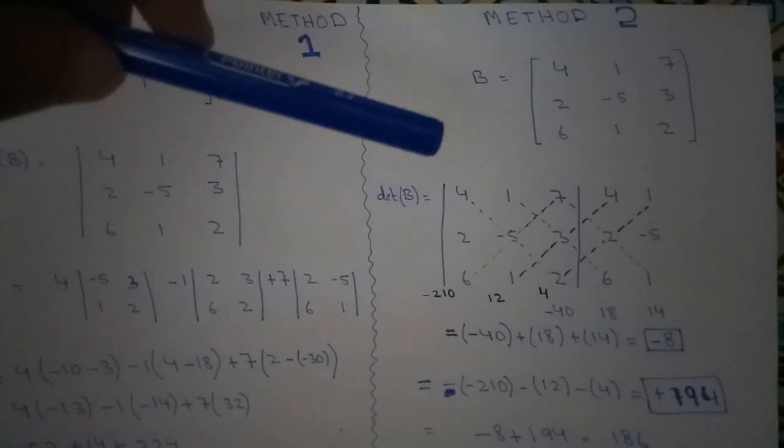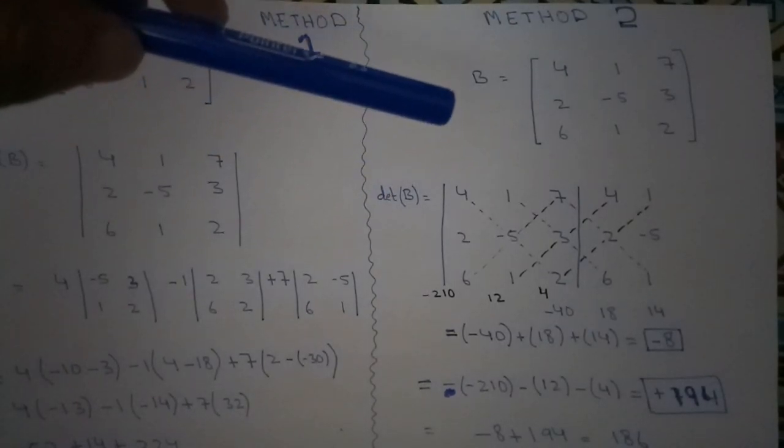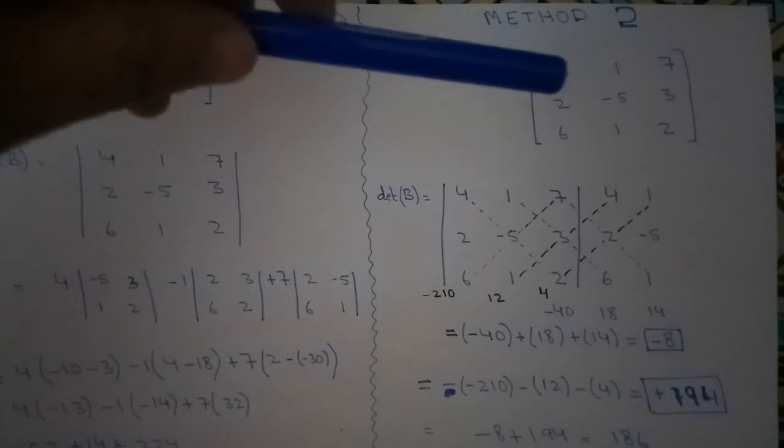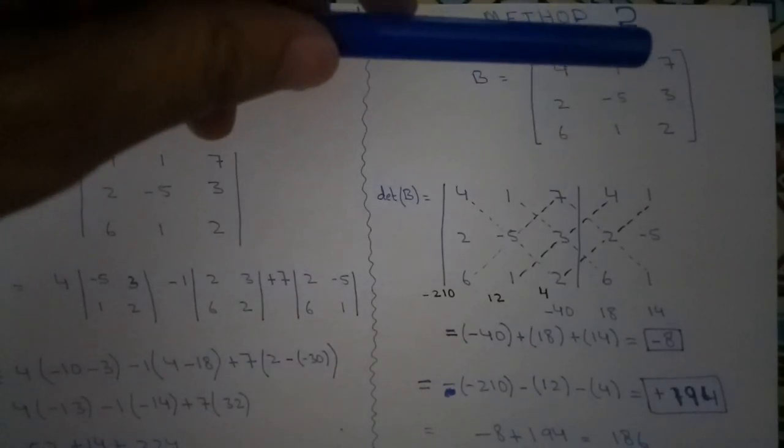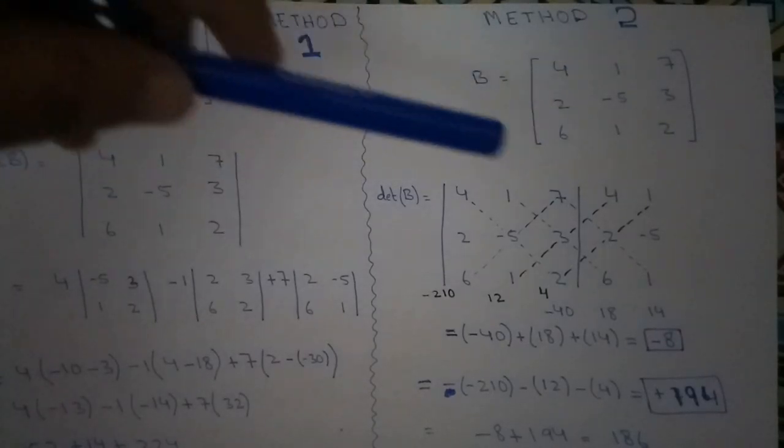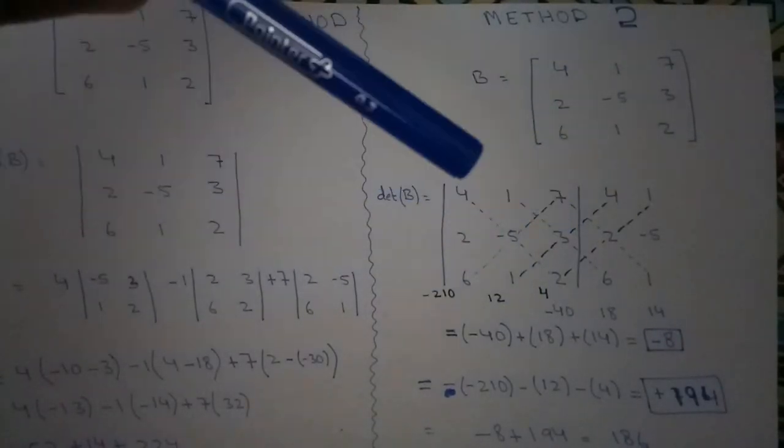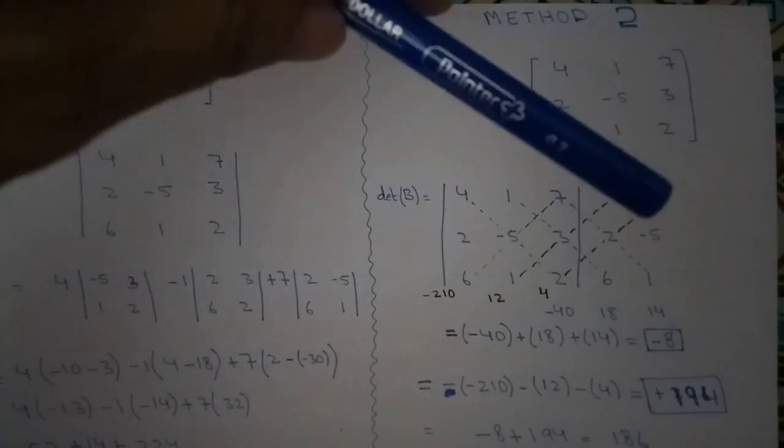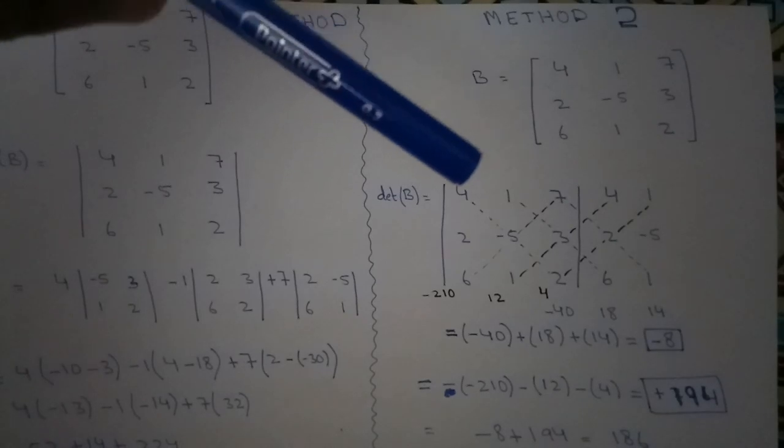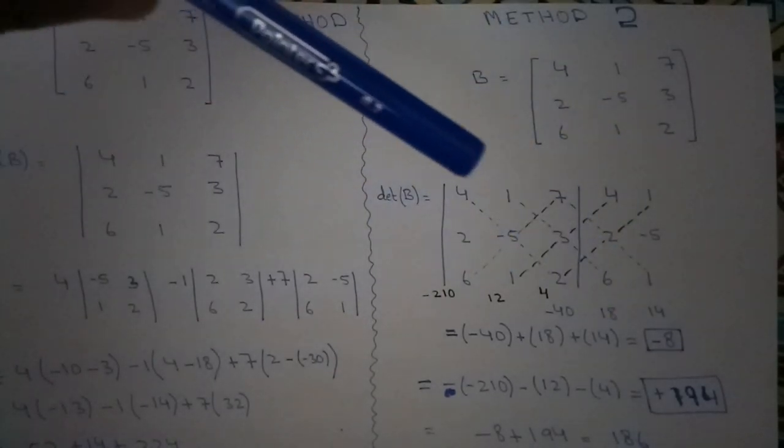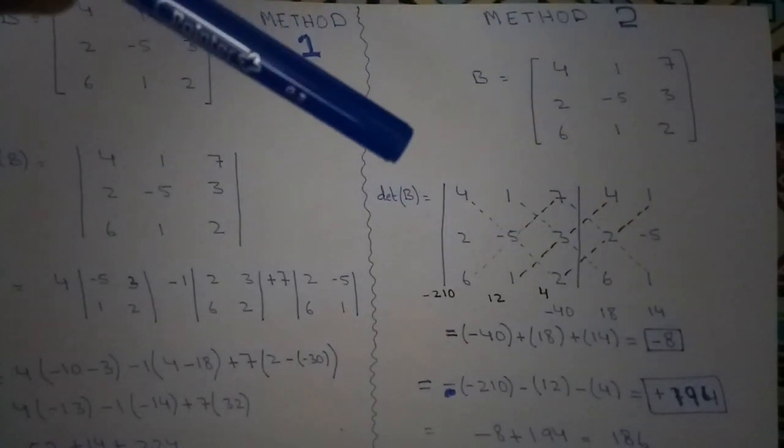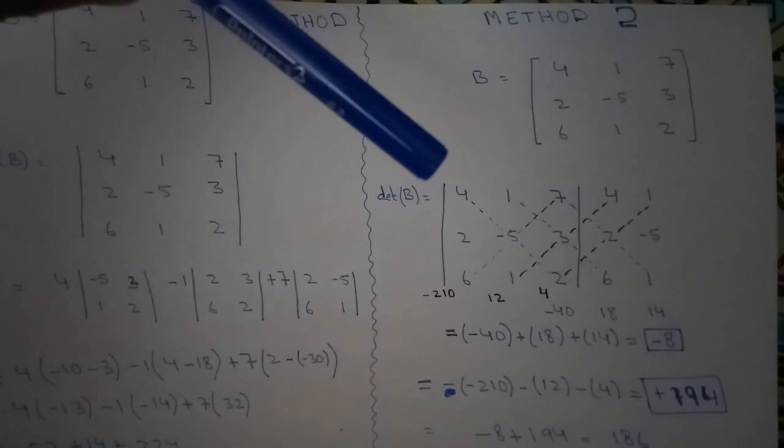Now in this method what we do is that first of all we write down all of those elements like 4, 2, 6, 1, minus 5, 1, 3, 7, 3, 2 in the same way, and after that we will rewrite the first column and the second column outside. Just like you can see: 4, 2, 6, 4, 2, 6, 1, minus 5, 1, 1, minus 5, 1.